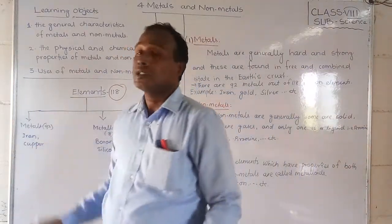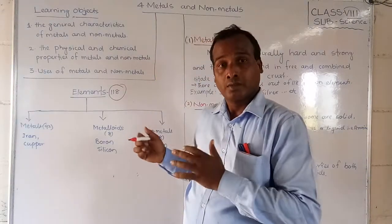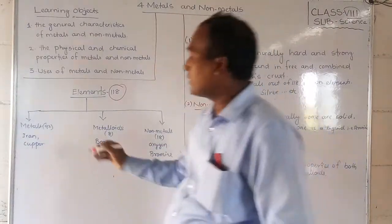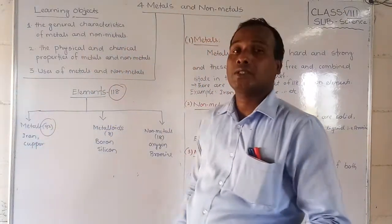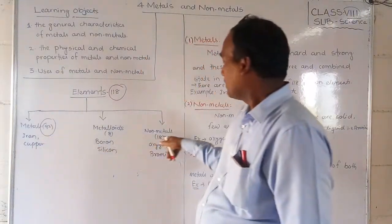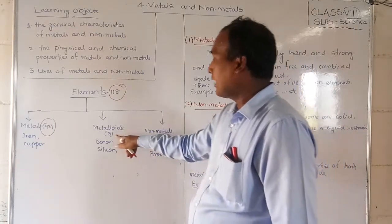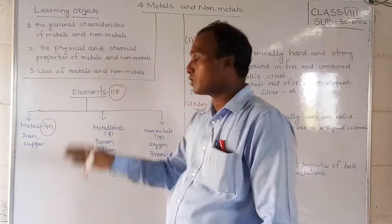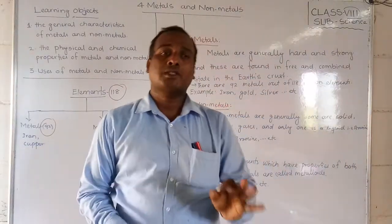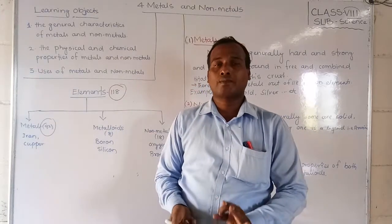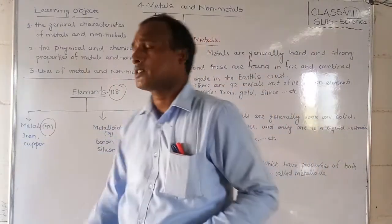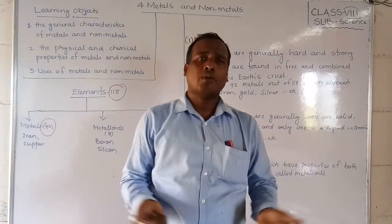Every substance is made up of one or more elements — some are metals, some are non-metals, and some are metalloids. How many of each are there? There are 92 metals, 18 non-metals, and 8 metalloids. Some books may give slightly different numbers like 87 or 99, but generally we consider 92 metals, 18 non-metals, and 8 metalloids.